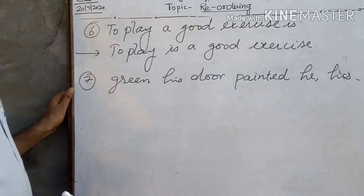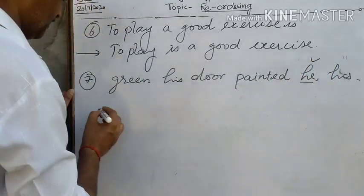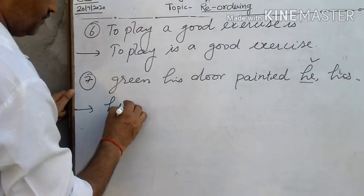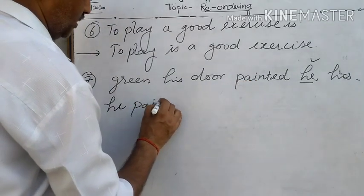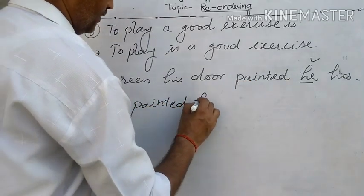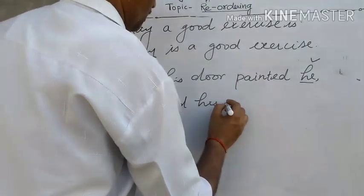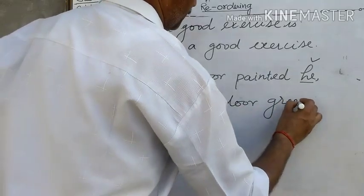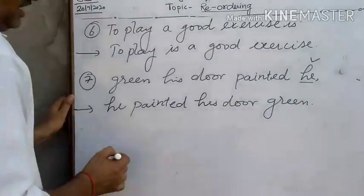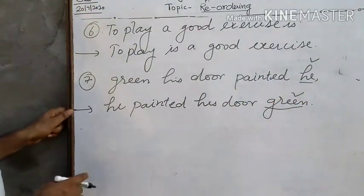Students, first of all we find out subject part. Subject: he. After it, predicate part: he painted the door green. 'Green' is adjective complement.